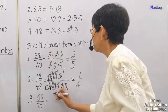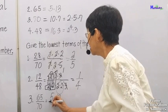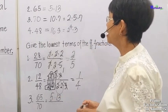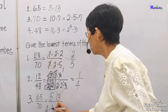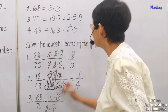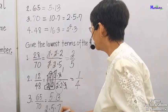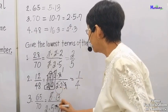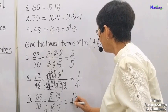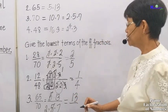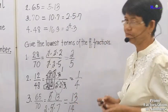Lastly, we have 65 over 70. 65 is 5 times 13, and 70 is 2 times 5 times 7. We cancel out the 5, and we have 13 over 40.